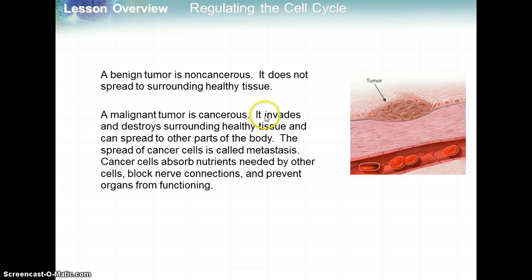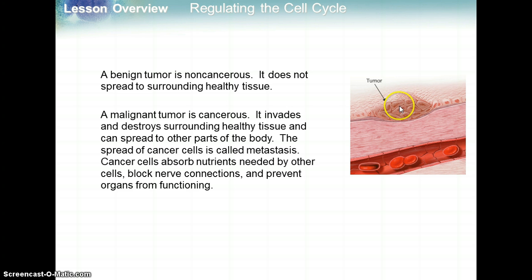There are two basic types of tumors. A benign tumor is non-cancerous — I remember it by thinking of 'bueno' in Spanish, starting with B, meaning good. Compared to a malignant tumor, a benign tumor doesn't spread to other tissue; it stays in its spot. A malignant tumor — the prefix 'mal' means bad — is a cancerous tumor that invades and destroys surrounding healthy tissue and can spread to other parts of the body. This process is called metastasis. Cancer cells absorb nutrients needed by other cells, block nerve connections, and prevent organs from functioning properly.